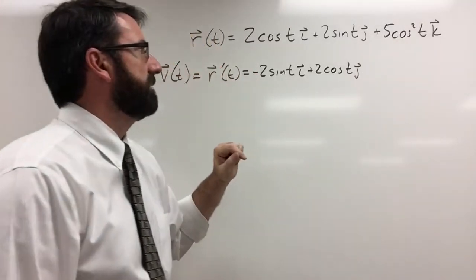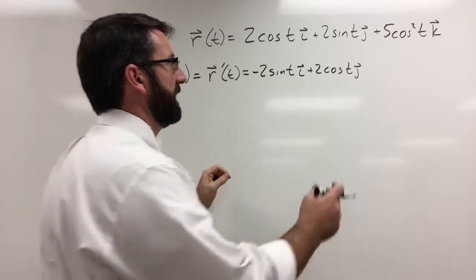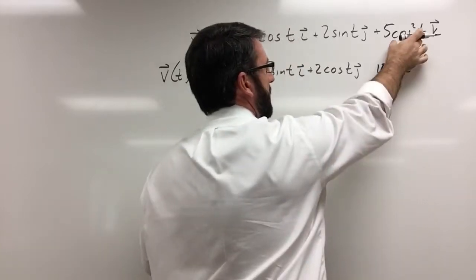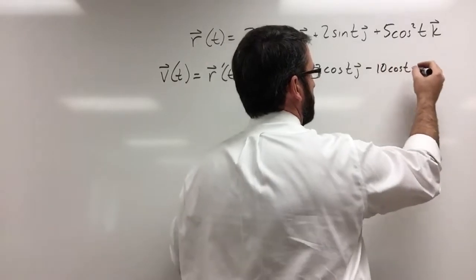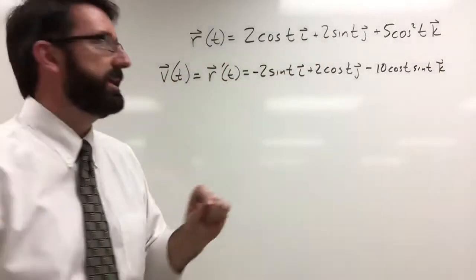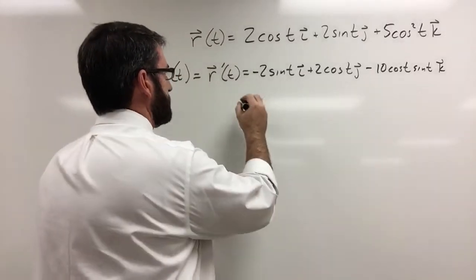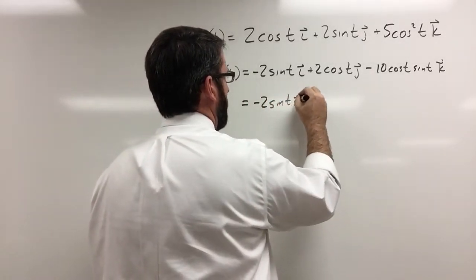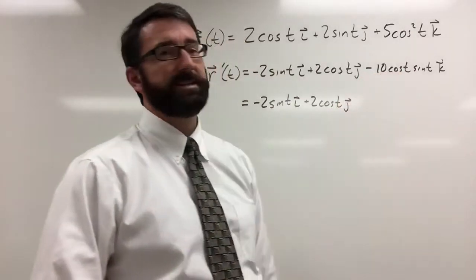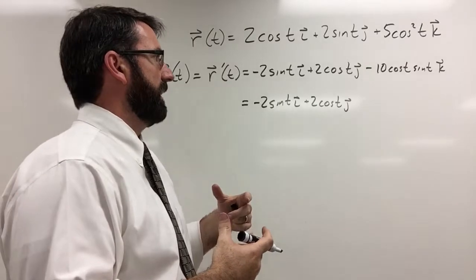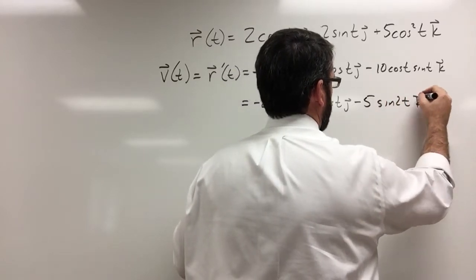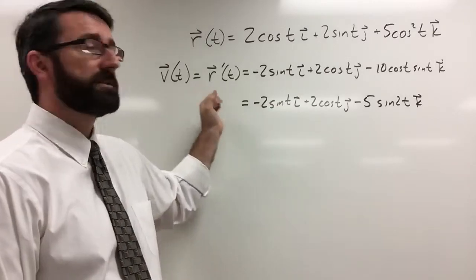And then for 5 cosine squared of t, we're going to have to bring that 2 down, so that's going to make that a 10. Cosine of t times the derivative of cosine, which is negative sine, so this is going to be negative 10 cosine t sine t k. We can simplify this: negative 2 sine t i plus 2 cosine t j, and 2 cosine t sine t is going to be equal to sine of 2t, so this is minus 5 sine of 2t times the unit vector k. So there's our velocity vector.